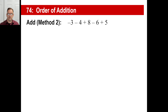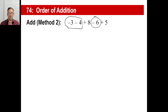Let's try method two — this is exactly the same problem. Instead, let's lump all the negatives together. Those are two negatives, and oh, there's another one. So we have three of those together. Since all of these are the same sign, we know the answer is going to be negative. Three plus four plus six is thirteen, so the answer will be negative thirteen.